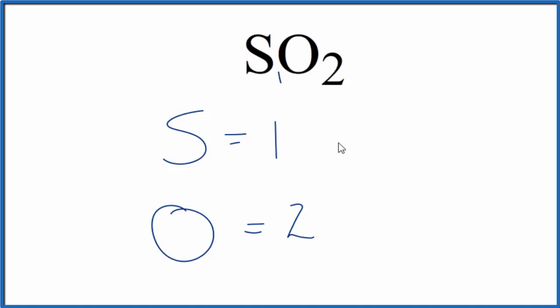If you're asked to figure out the number of atoms in one mole of SO2, you'll just take the number of the element and multiply it by Avogadro's number. So for instance if we have one sulfur atom in one mole of SO2, we'll have 1 times Avogadro's number.